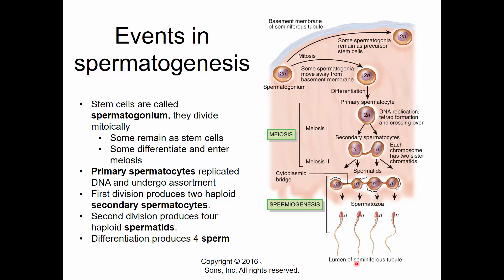Applying this to spermatogenesis: stem cells called spermatogonia — some remain as stem cells, while others progress into meiosis. They differentiate into a primary spermatocyte, DNA replicates, chromosomes condense, homologous pairs line up into tetrads, crossing over occurs, and they assort independently. After the first division, two secondary spermatocytes are produced — haploid but with duplicated chromosomes. A second division produces four spermatids that differentiate into spermatozoa. All are haploid and genetically unique. One primary spermatocyte ultimately produces four sperm.